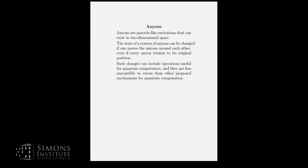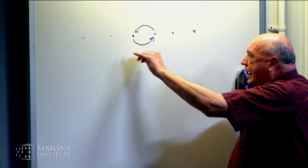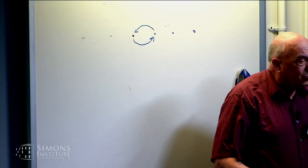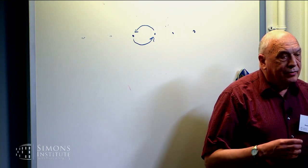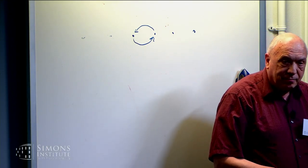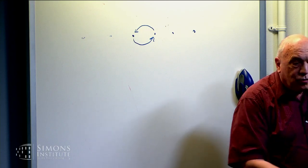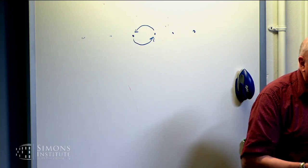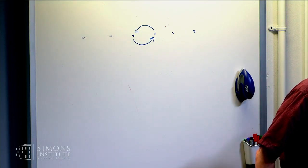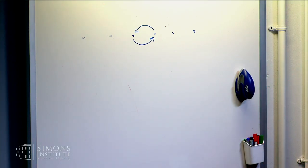The second important ingredient is that the unitary transformation that you get by moving the anyons in a certain way doesn't depend on the details. If I go up here with a shaky hand and move them around like that, it will still produce the same result as if I moved it nice and smoothly. The effect on the system, what happens in the computation, depends only on the topological properties of which anyons did you move around, which other ones and so on, not on the details of how you moved them.